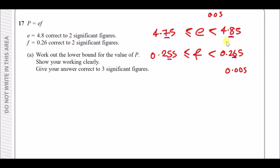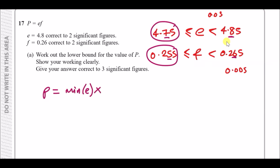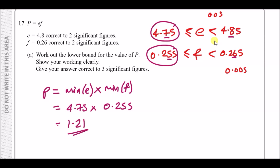To get the lower bound of p equals e times f, multiply the minimum values together: 4.75 times 0.255. Putting this in the calculator gives exactly 1.21 to three significant figures.